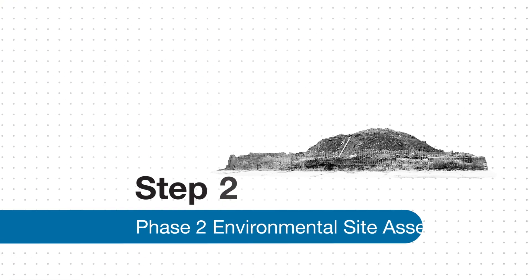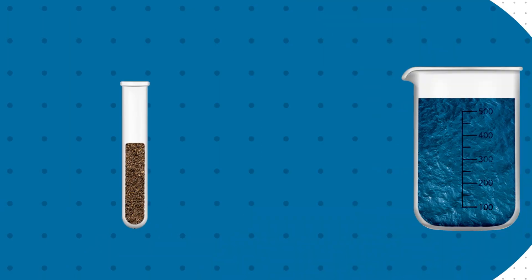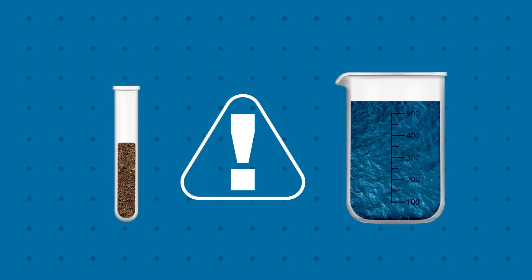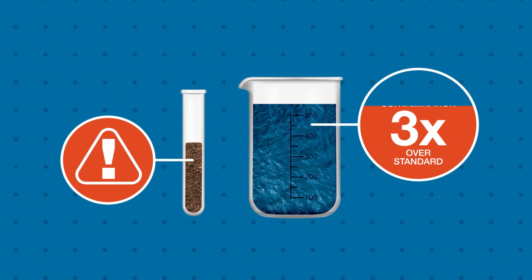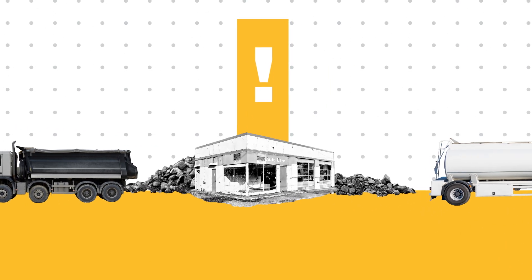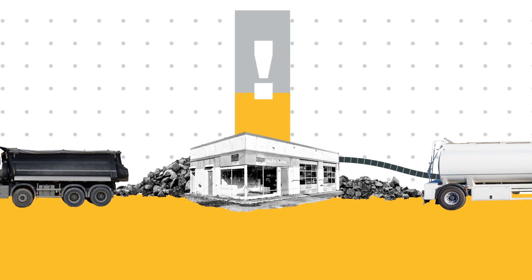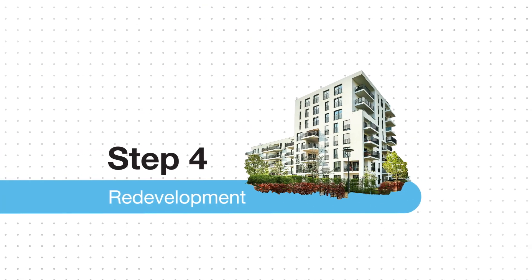If the investigation suggests contamination, the second step is to conduct a further investigation. A Phase II assessment can confirm the existence of contamination and determine the extent of the pollution and what clean-up is needed. The third step is clean-up. How much clean-up depends on how much contamination there is and how the property will be reused. Once the site is cleaned up, the property can be redeveloped.